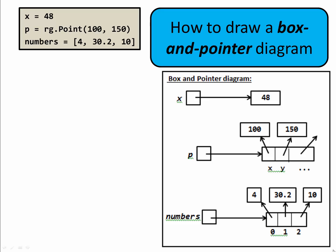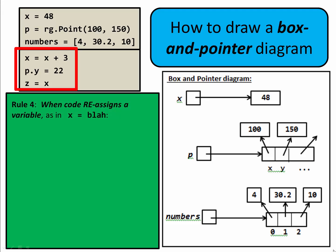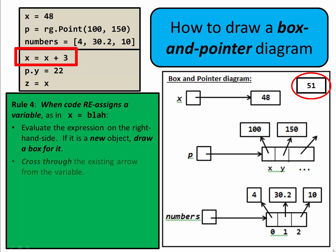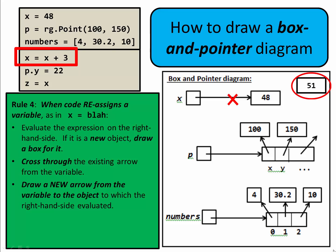Our fourth and final rule deals with when a variable is reassigned. When code reassigns a variable, you evaluate the expression on the right-hand side, and if it's a new object, you draw a box for it. For example, when the line x = x + 3 runs, the right-hand side looks up the value of x — namely 48 — and adds 3 to get 51. That's a new object, so we put a box for 51. Then you cross through the existing arrow from the variable, and draw a new arrow from x to 51.